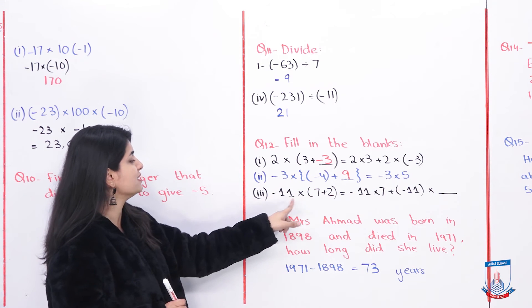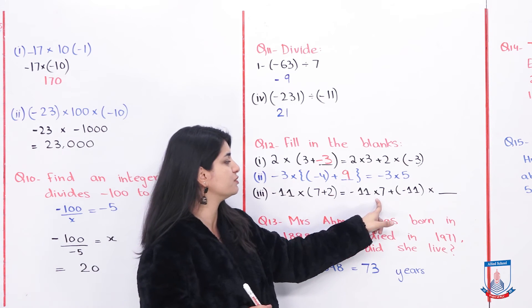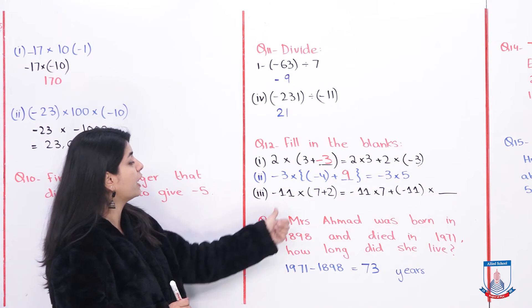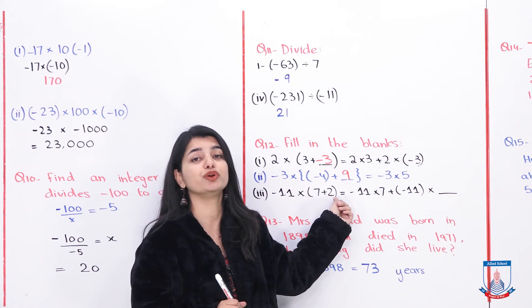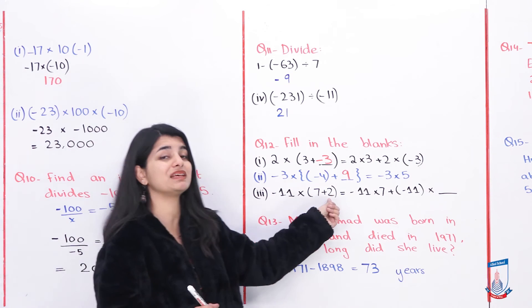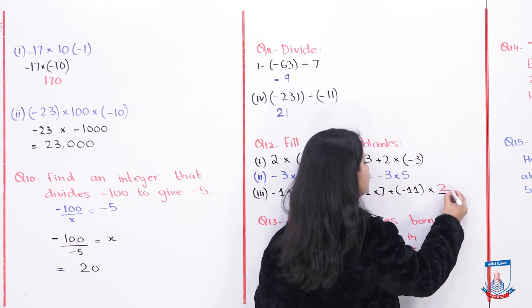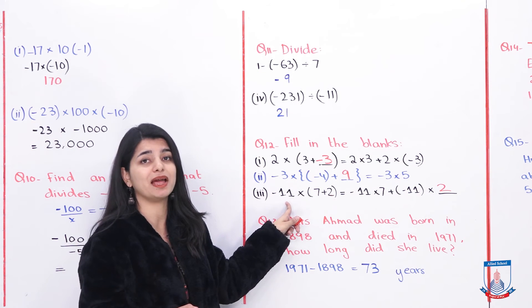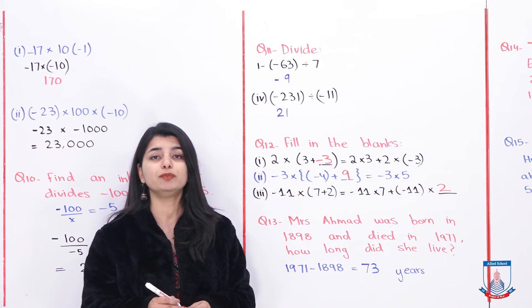For the third blank: minus 11 multiplied by (7 + 2) equals minus 11 into 7 plus minus 11 into dash. Using the distributive property again, minus 11 must multiply both numbers inside. Minus 11 multiplies 7, and also multiplies 2. So the missing number is 2. That completes question number 12.